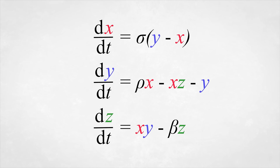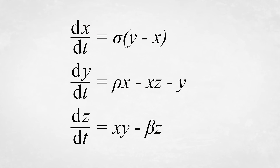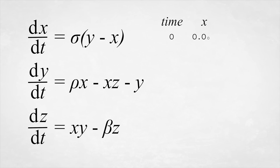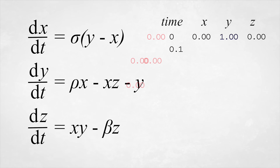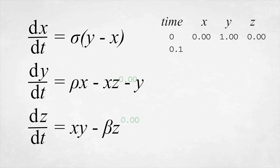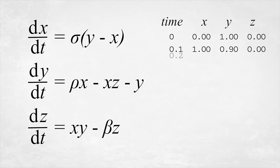The way you solve these equations with a computer is by starting at some initial set of values, like x equals 0, y equals 1, z equals 0, and then moving time forwards by some small fraction, and calculating the change in x, y, and z as described by the right-hand sides of the equations. Those then become your new starting values, and you repeat.